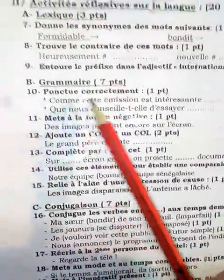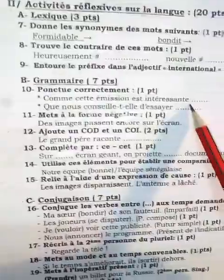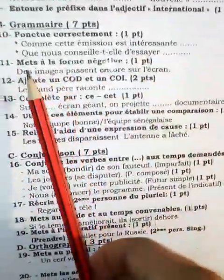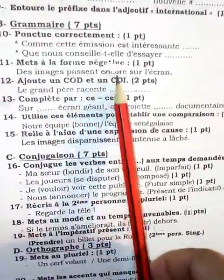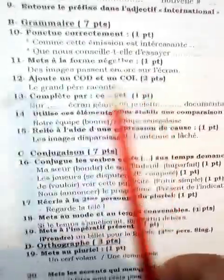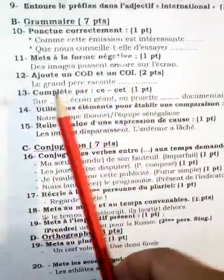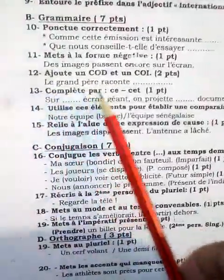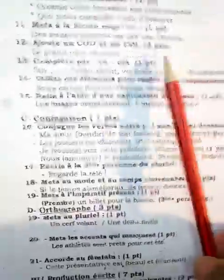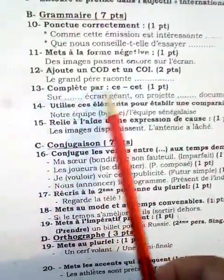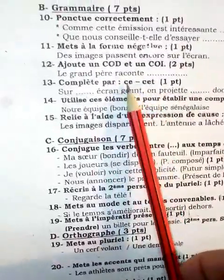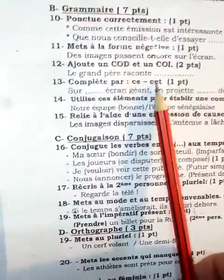La grammaire : ponctue correctement. Ça veut dire fais la ponctuation, mettre le point exact à la fin de chaque phrase. Comme cette émission est intéressante — qu'est-ce qu'on va mettre ici ? Que nous conseille-t-elle d'essayer — qu'est-ce qu'on va mettre ? Mets à la forme négative : des images passent encore sur l'écran. Ajoute un COD et un COI — le grand-père raconte. Tu ajoutes le complément d'objet direct et le complément d'objet indirect dans la même phrase. Complète par « ce » et « cette » — ce sont des démonstratifs. Il faut faire attention quand utiliser « ce » et quand utiliser « cette ».